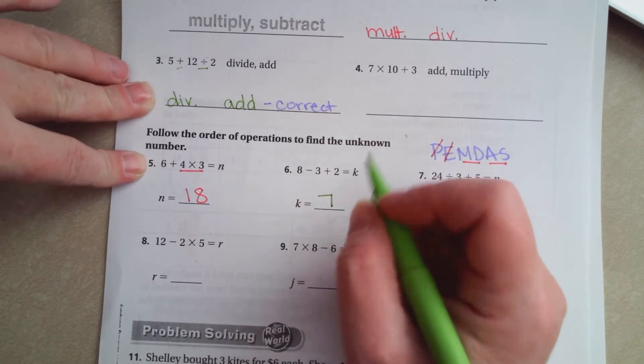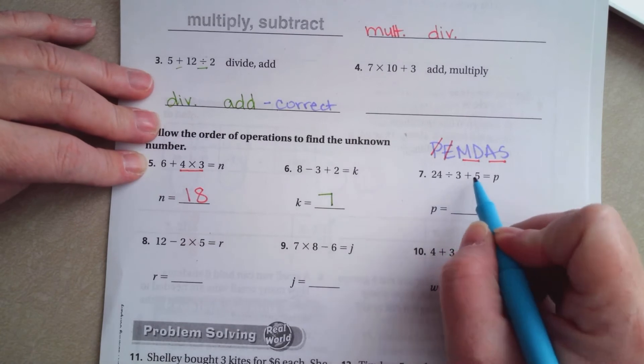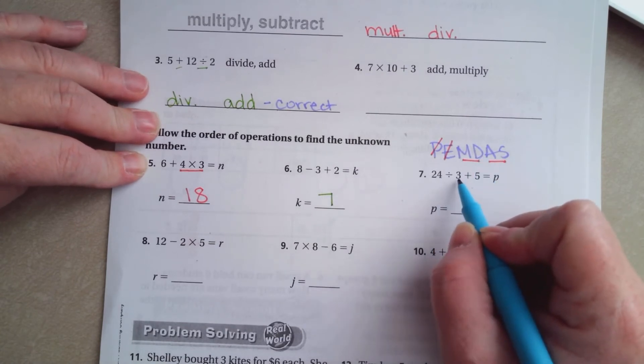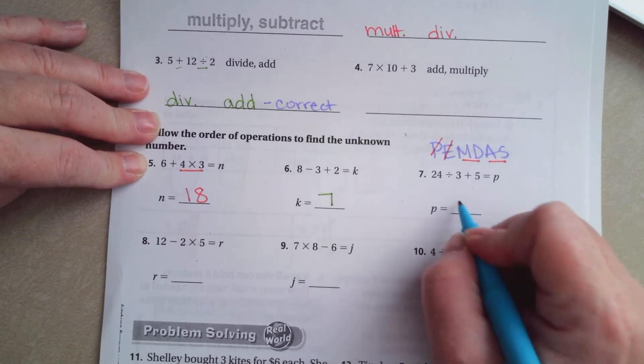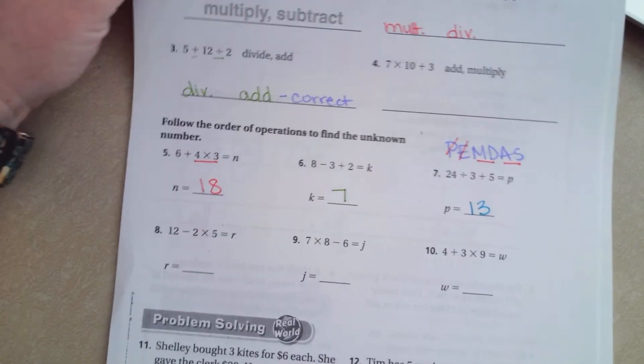All right now we have a division and we have an addition. Well division comes first so 24 divided by 3 that's going to be 8. 8 plus 5 is going to be 13. You guys try to do 8, 9 and 10.